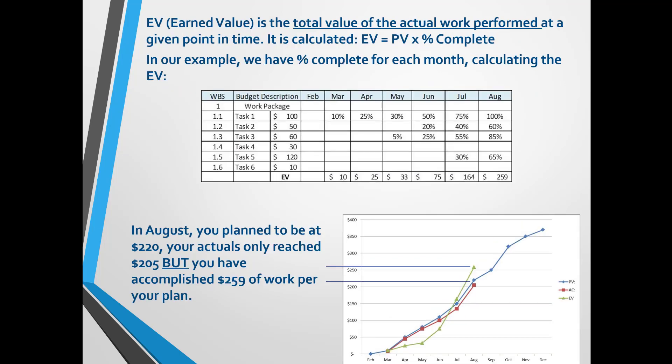If you simply record the costs, the progress shown is that your project is under budget. This is where EVM comes in — you need to see how much of the task was really performed for the same given month, not just the costs it incurred. So, keeping to the same example, use the percent complete from your schedule to calculate EV, which is multiplying the PV with the percent complete.